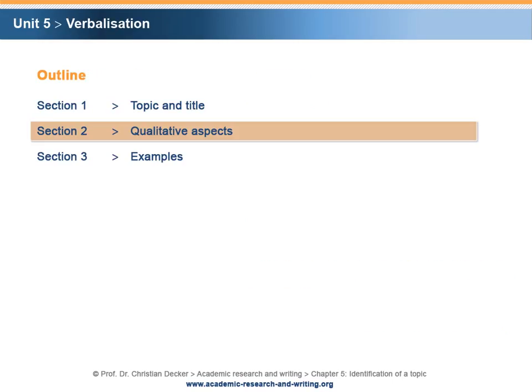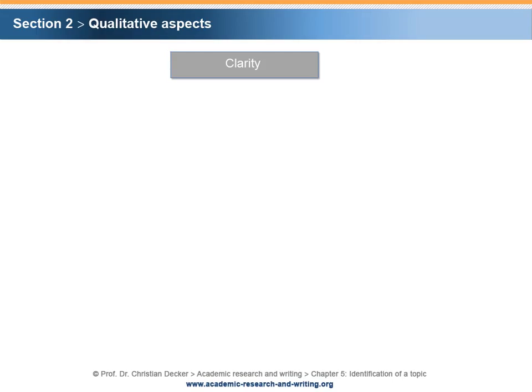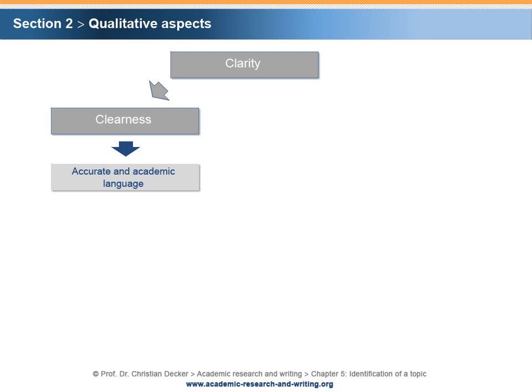Section 2: Qualitative Aspects. We already know that there are a number of academic principles that have to be obeyed in academic research. Specifically, the principle of clarity becomes important while verbalizing a topic. One aspect of clarity is clearness, which demands accurate and academic language — or, to be more precise, a clear terminological and linguistic application while formulating a topic.